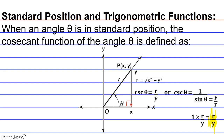So the cosecant function of theta is defined as R divided by y — the hypotenuse divided by the y-coordinate of point P, or the y-coordinate of the side opposite the angle. Comprehension of this material is not difficult at all, and in the short amount of time it takes to complete this entire cram session, you'll be prepared to answer a battery of questions in Algebra 2. So be sure to inbox me at memedicine at gmail.com to order this complete cram session. Thanks for tuning in.